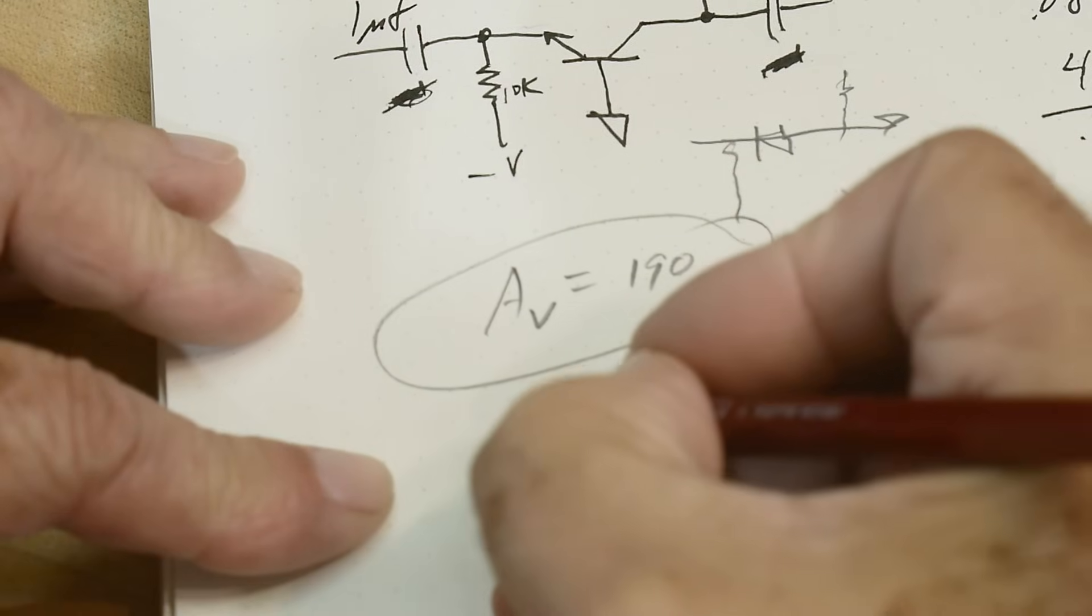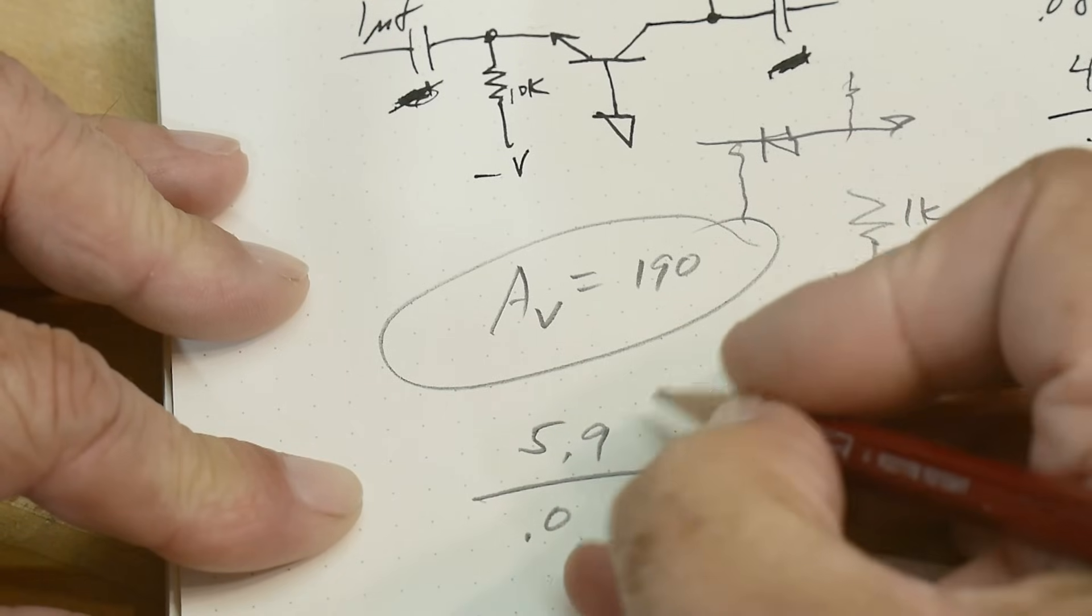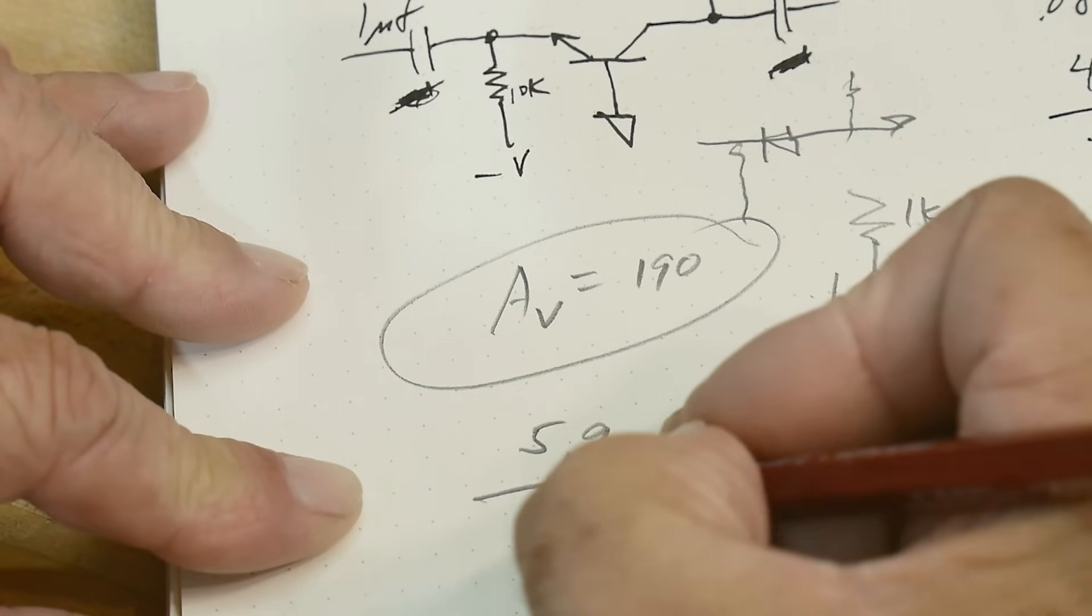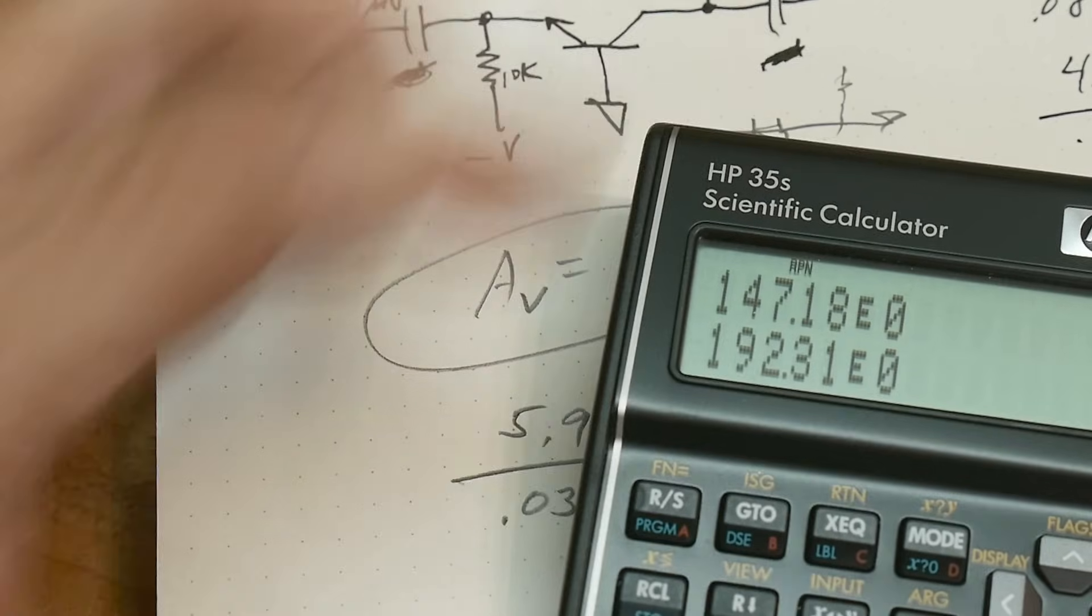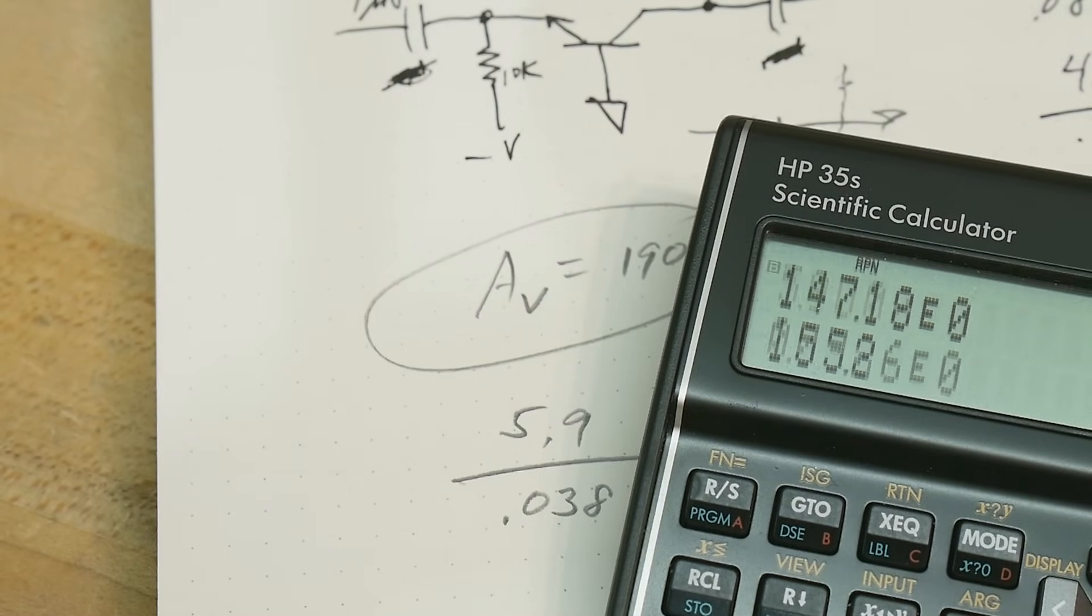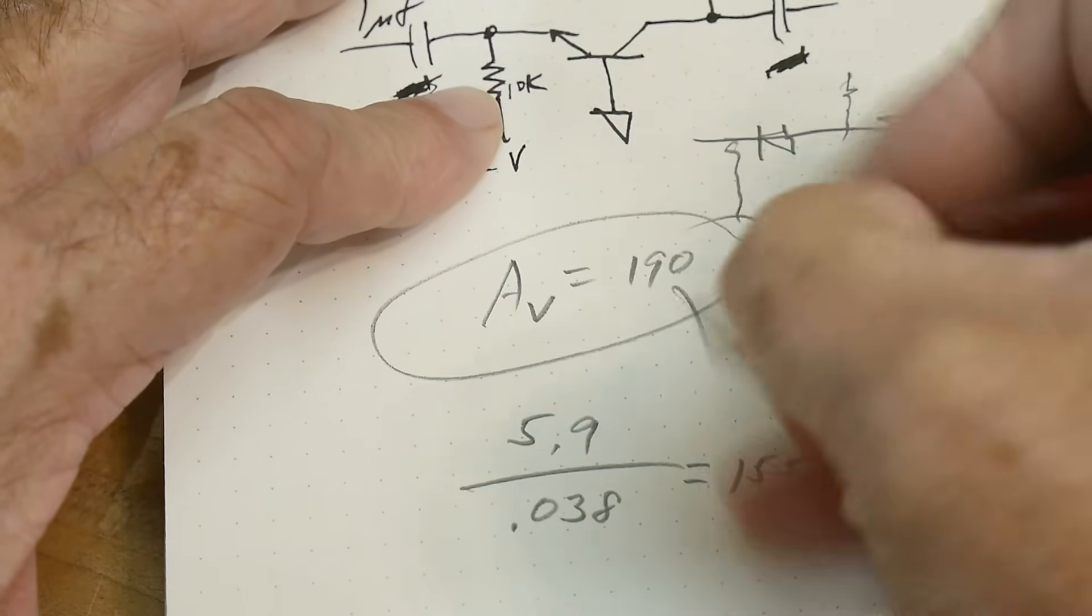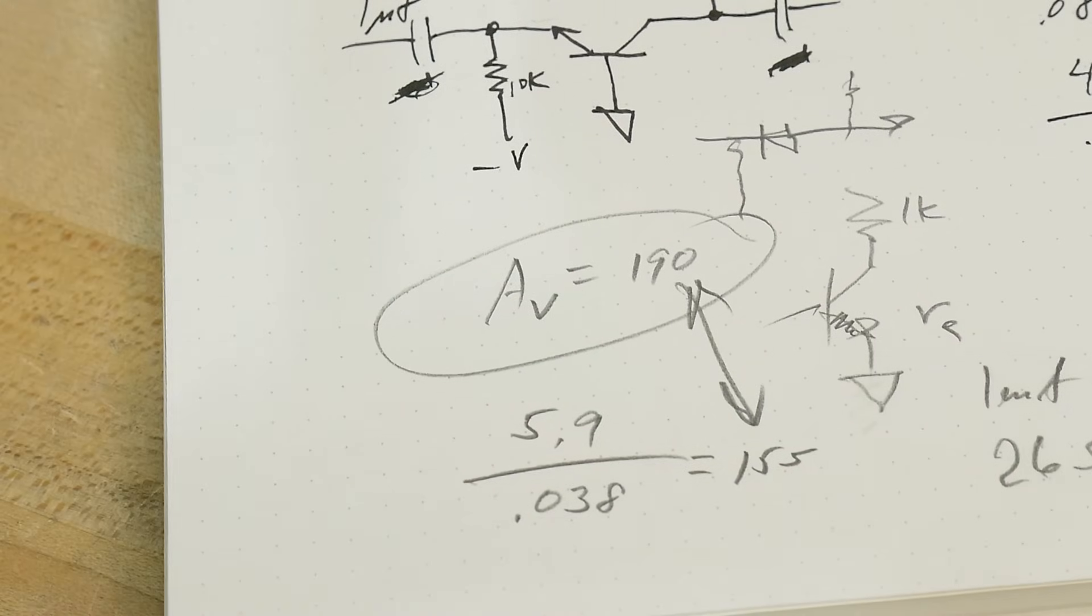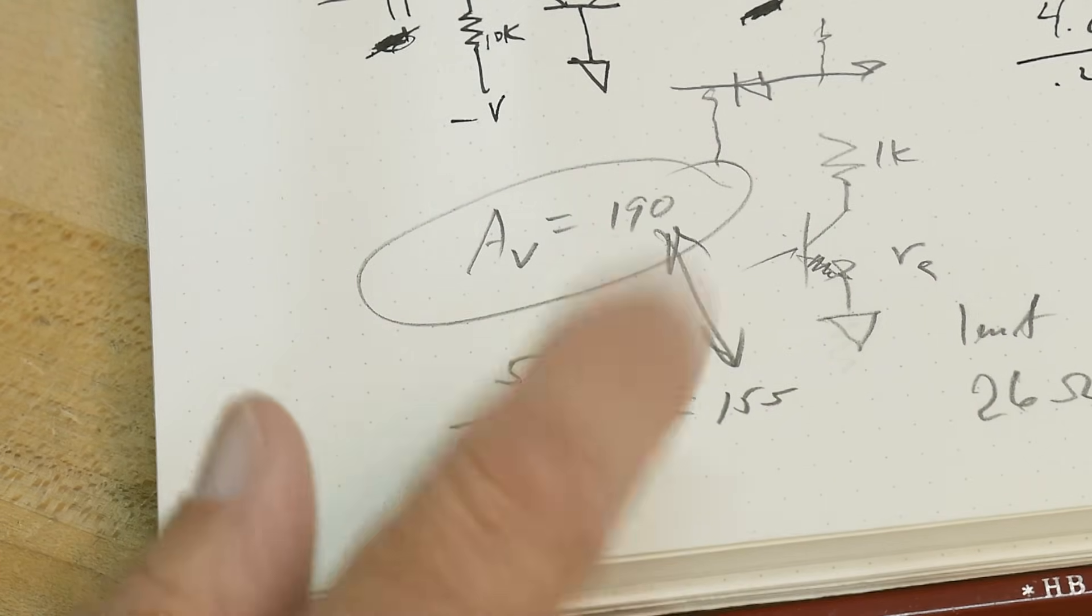So 38 millivolts and 5.9 volts. 5.9 divided by 38 - this should be our gain. Let's calculate that. We have 5.9 and 38 divide - we have 155. So our gain is 155, and that's pretty close to 190. Everything's not perfect and there's other things to consider, but it's about where it's supposed to be. We are getting gain in a common base amplifier.